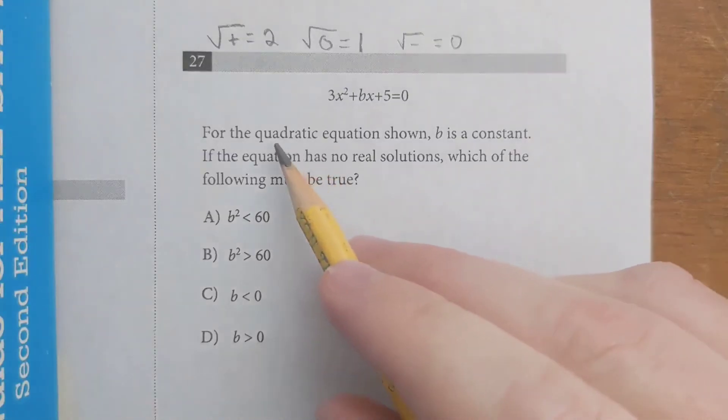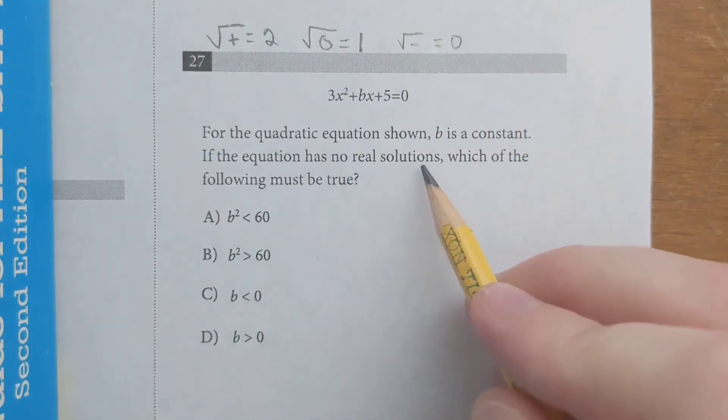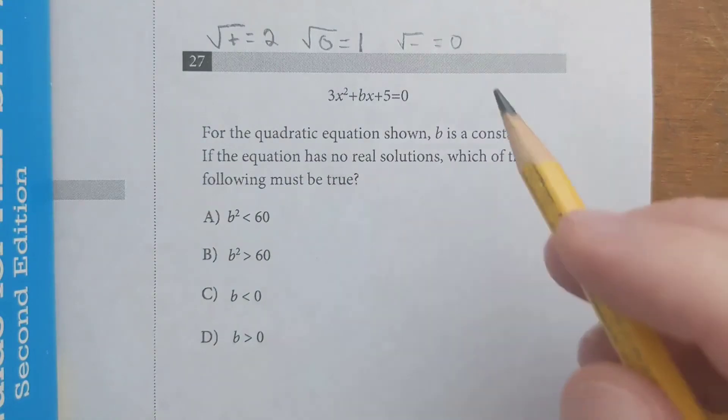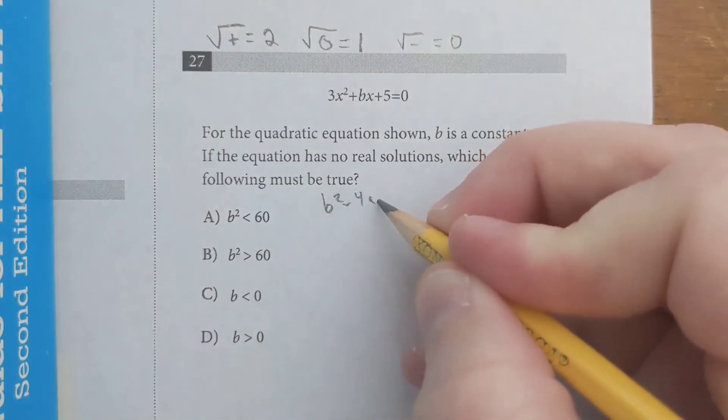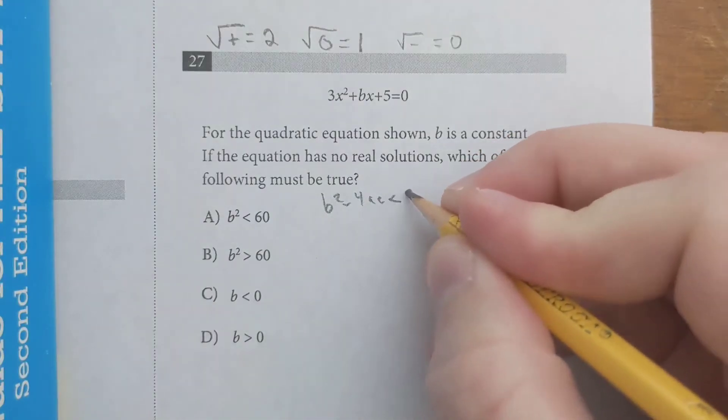Here's another one. Again, quadratic, talking about the number of solutions. This time there are no real solutions, so we want our discriminant to be negative. So b squared minus 4ac has to be less than zero.